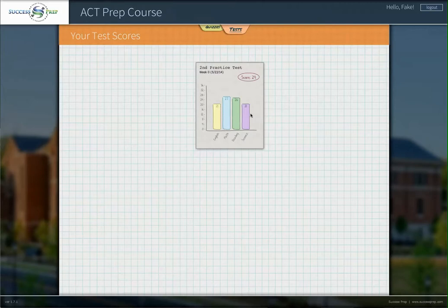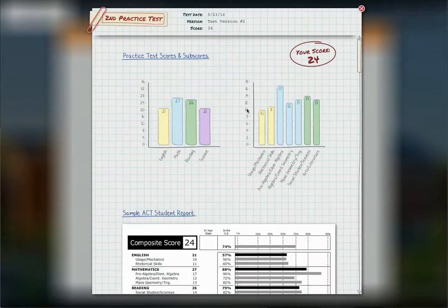So English, math, reading and science. If you click on that some more, it takes you into more analytics about what the student did. It breaks down every score by the topic areas under that particular subject. Under English, you could see the usage mechanics and rhetorical skills.